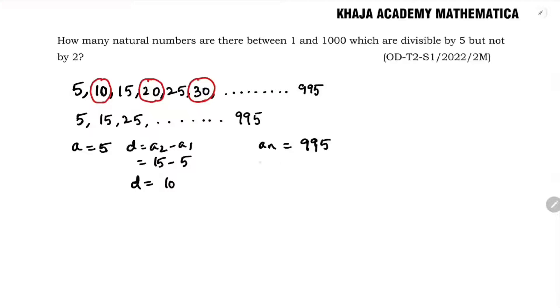I need to find N. So AN formula is A plus N minus 1 into D equals 995. A is 5, N minus 1, D is 10.